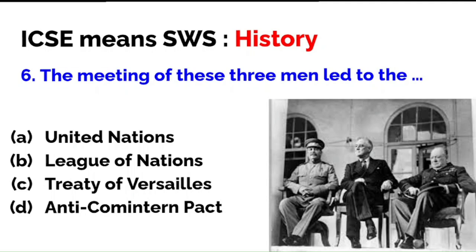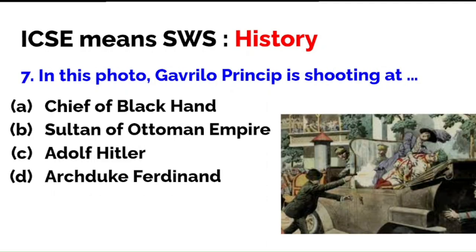The meeting of these three men — this photograph is in most textbooks — led to which organization? The options are the United Nations, the League of Nations, the Treaty of Versailles, or the Anti-Comintern Pact. The correct answer is A — the United Nations. This photograph shows Joseph Stalin of Russia, Roosevelt of the USA, and Winston Churchill, Prime Minister of Britain. Please know this photograph carefully and be able to identify all three leaders.